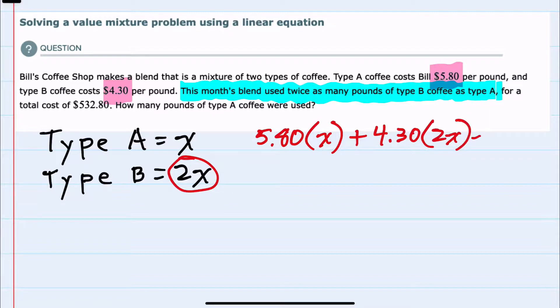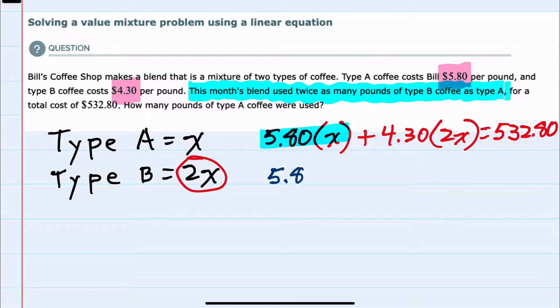And then the total price for the mixture is $532.80. And from here, I can simplify on the left-hand side. $5.80 times x is just $5.80x.